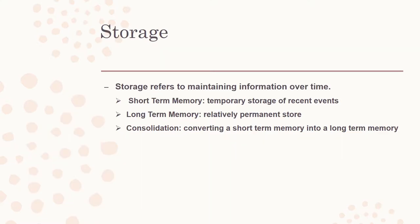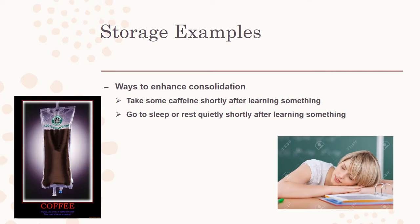The second stage of memory is storage. Storage refers to maintaining information over time. Short-term memory is temporary storage of recent events, while long-term memory is a relatively permanent store. Consolidation is converting a short-term memory into a long-term memory. Ways to enhance consolidation are to take some caffeine shortly after learning something, or to go to sleep or rest quietly shortly after learning something.